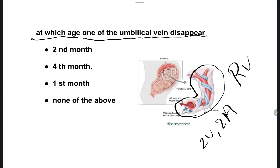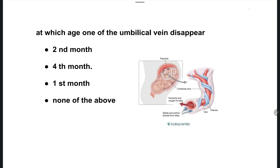Options are: option A, second month; option B, fourth month; option C, first month; option D, none of the above. The right answer is option B, fourth month.